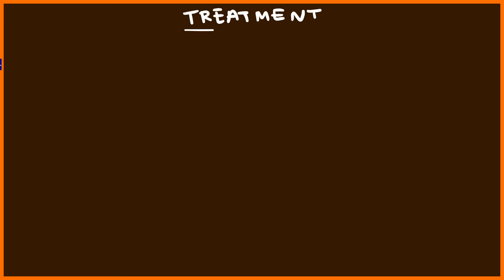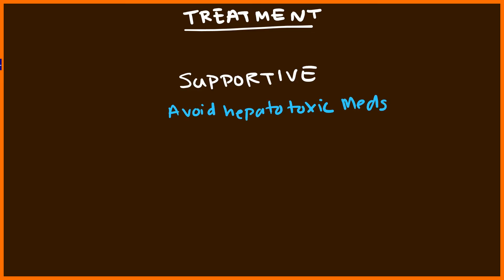Now that you've diagnosed Hepatitis A virus in your patient, how do you treat it? Treatment for Hepatitis A virus is largely supportive. It's a self-limiting condition with no real chronic effects in the majority of patients. Patients will feel very ill and they'll be yellow, which can be very scary for them, but you have to explain that this is a temporary situation. The best advice is to tell them to avoid hepatotoxic medications such as Tylenol.